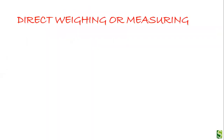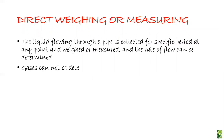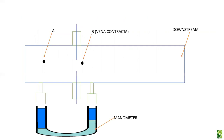The direct weighing or measuring method involves collecting the liquid flowing through a pipe for a specific period at any point, and then weighing or measuring it. The rate of flow is determined from that. Gases cannot be determined by this method — it can only be used for liquids.